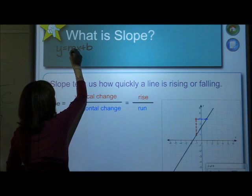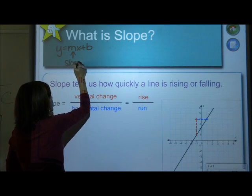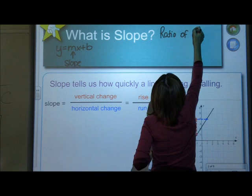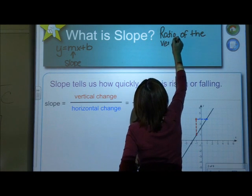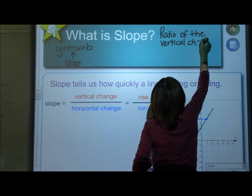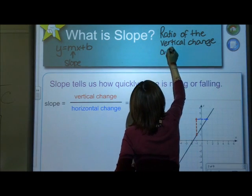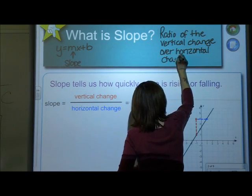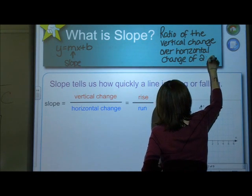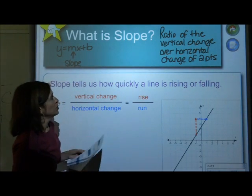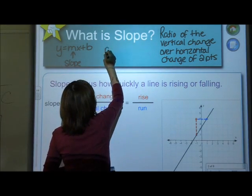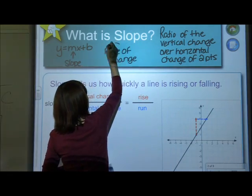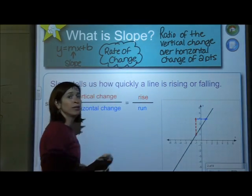You can see the slope because that m indicates our slope. But slope is actually a ratio of the vertical change over the horizontal change of points, two points. Okay, so I also want you to think of it as a rate of change. And the nice thing about change is that when you were younger and you were learning about words, change means subtract.